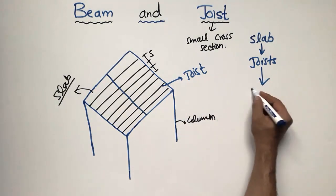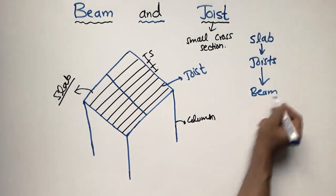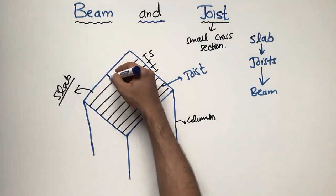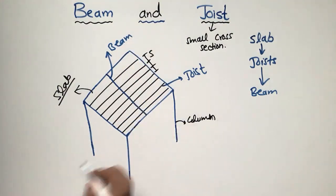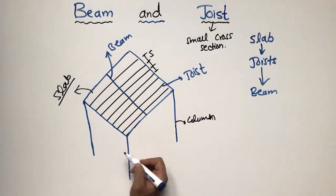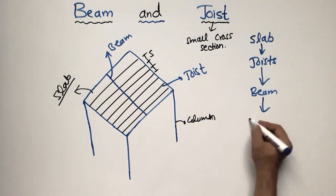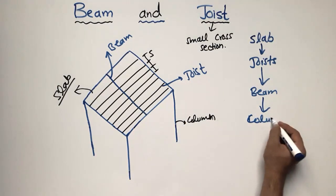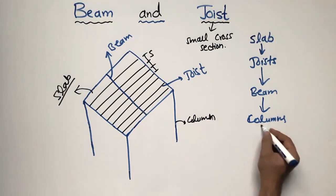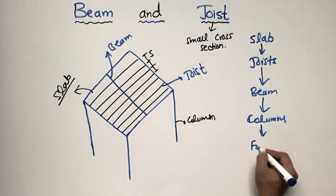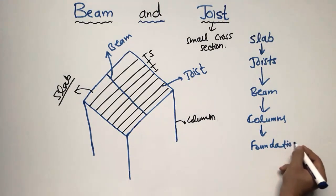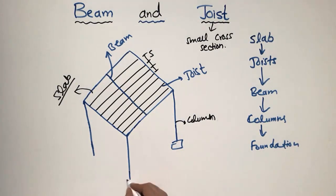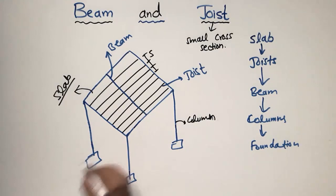The joist takes the load and transfers it to the beam. You can see here this one member is the beam, which takes the load from all the joists. Then the beam transfers the load to the columns, and similarly the columns transfer the load to the foundation.